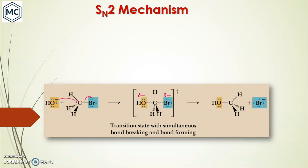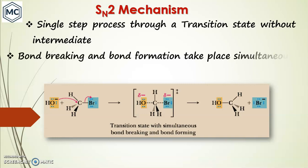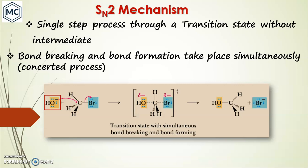The mechanism of SN2 reaction is a single-step process that proceeds through a transition state — there is no intermediate. Bond breaking and bond formation take place simultaneously; it is a concerted process. You can see that the hydroxyl nucleophile reacts with the electrophile and forms a transition state.